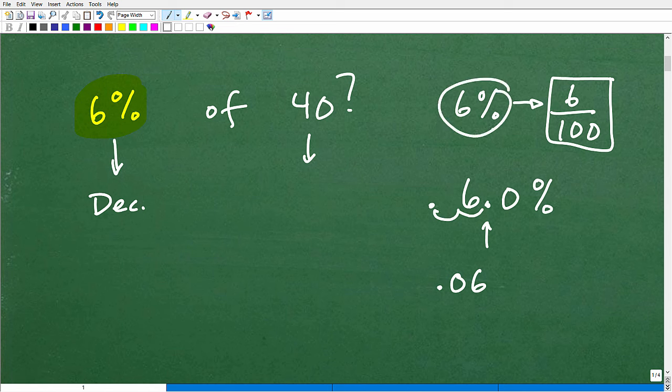You can just move the decimal point over two places to the left. And that's how we take a percentage and write it as a decimal.